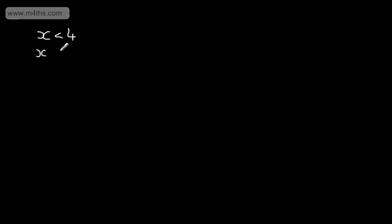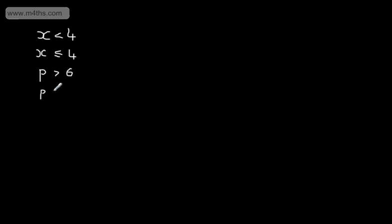If we had the statement x is going to be equal to or less than 4, the notation changes. With this particular example, we could include 4. If we had p is going to be greater than 6, we're looking for numbers larger than 6, so p could be 7, 8, 9, it could be a million. We can't include 6. If we had p was equal to or greater than 6, we would use the following notation.